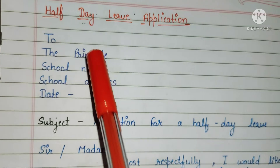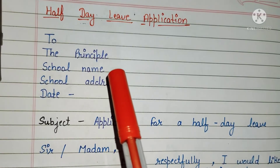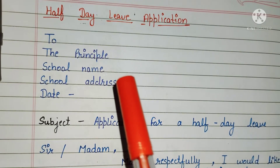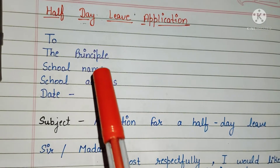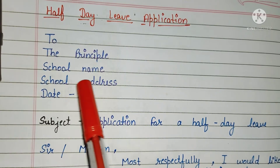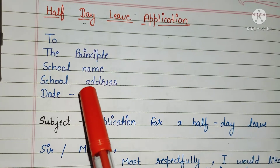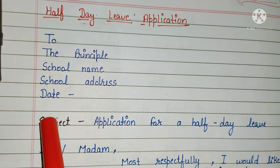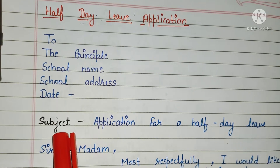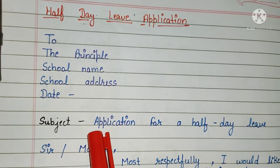Then write your school name, then your school address. After that, write the date. Then you have to write the subject in one line, like: 'Application for a half day leave.'